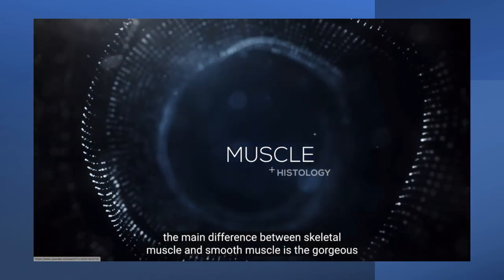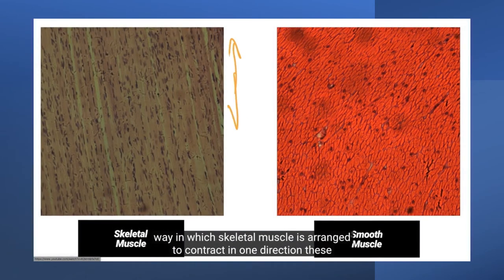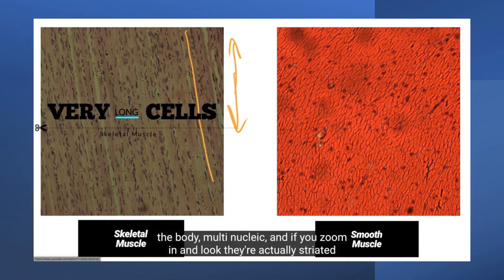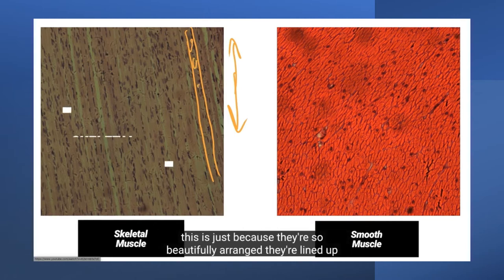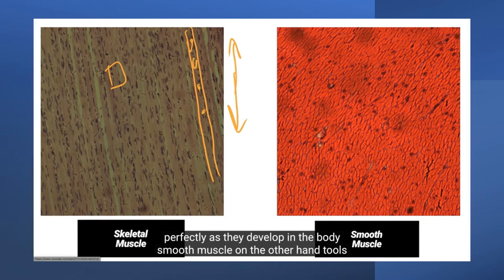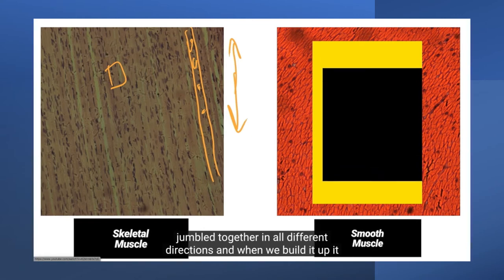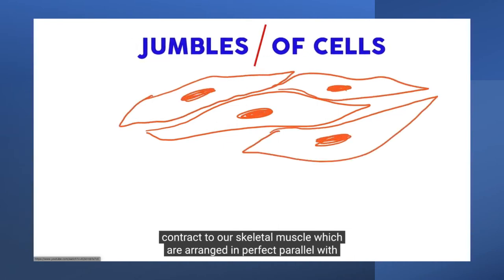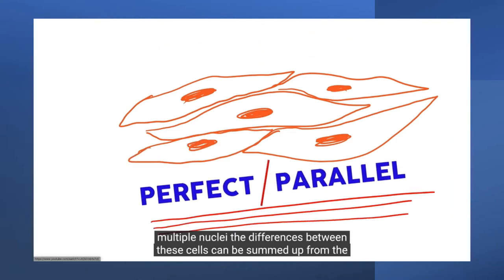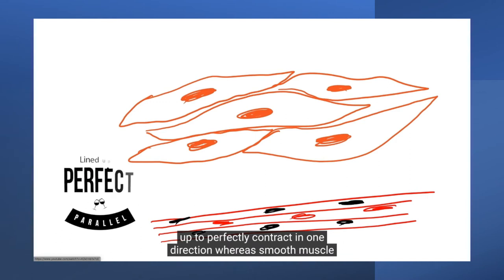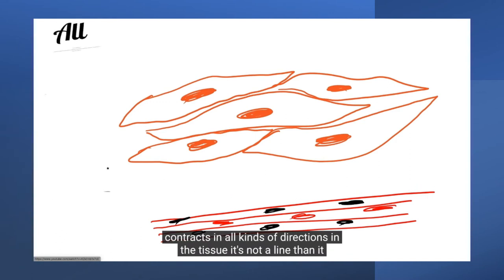The main difference between skeletal and smooth muscle is the way skeletal muscle is arranged to contract in one direction. The fascicles are full of muscle fibres — the fibres are one of the longest cells in the body, multi-nucleic, and if you zoom in they're actually striated because they're so beautifully arranged, lined up perfectly as they develop. Smooth muscle cells, on the other hand, jumble together in all different directions, in stark contrast to skeletal muscle. Skeletal muscle is designed to be in perfect parallel, lined up to perfectly contract in one direction, whereas smooth muscle contracts in all kinds of directions in tissue — it's not aligned and doesn't need to be.